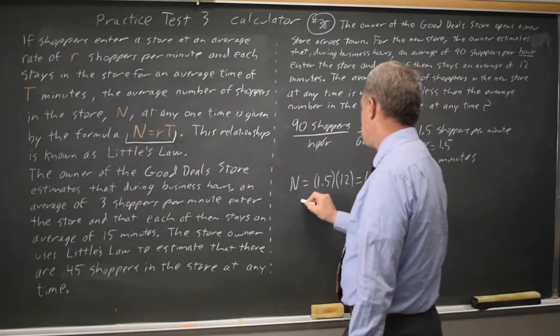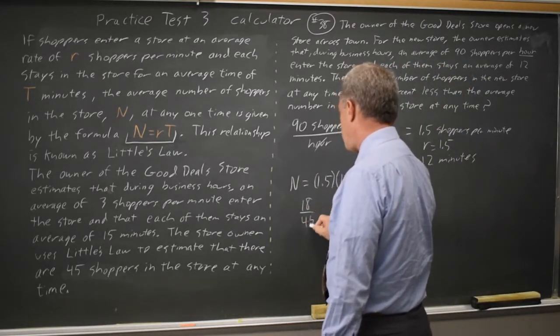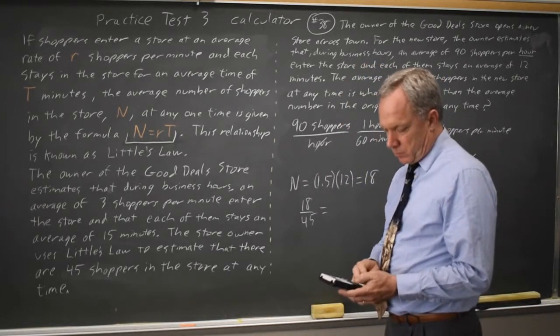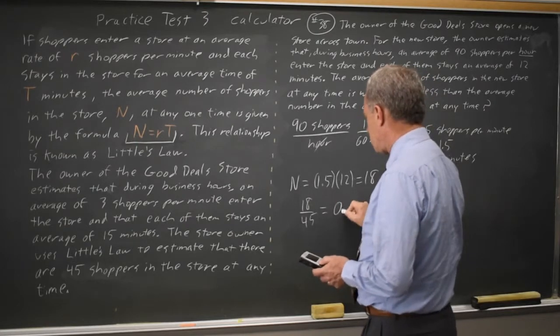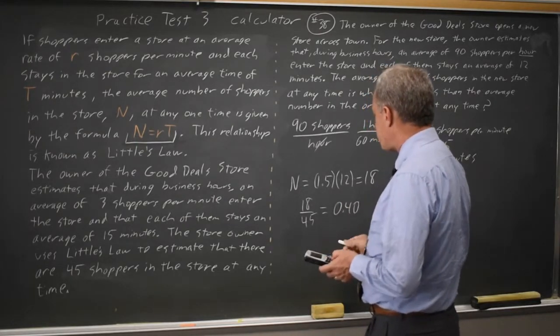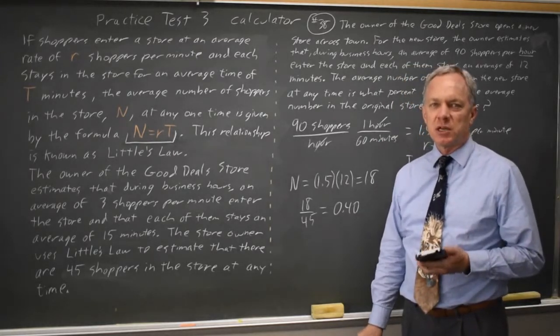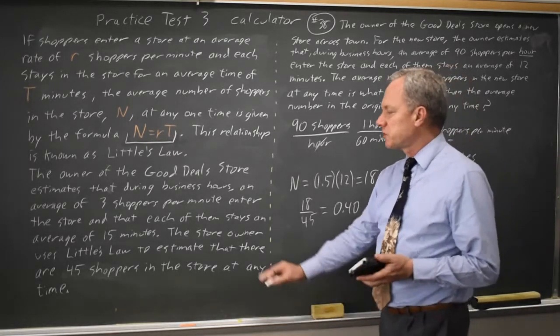Now, 18 over 45 equals 0.4, or 0.40 if we're going to do percents. And we're tempted to say we have 40% of the number of shoppers in the original store.